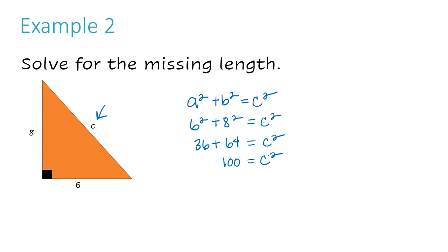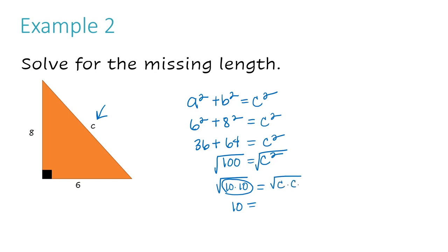Now I'm going to take the square root of both sides to undo my exponent. Whenever you want to undo an exponent, use a radical. Whatever you do to one side of the equal sign, you must do to the other. The square root of 100 is nice because 100 is a perfect square — it's the square root of 10 times 10, so 10 comes out. The square root of C squared is C times C, so C comes out and the radical drops off. The length of side C is 10.